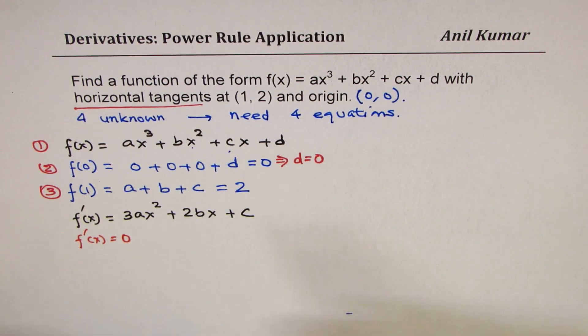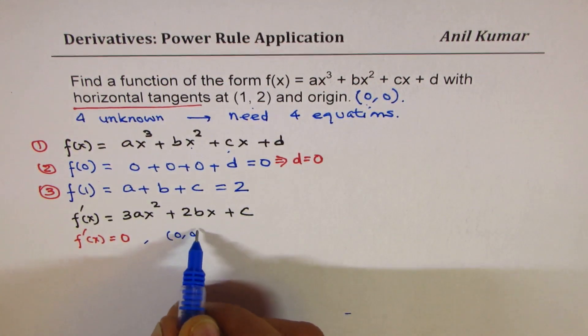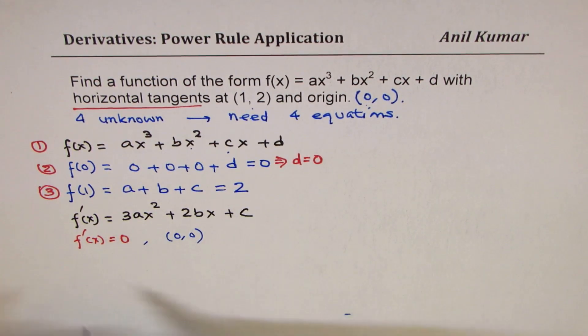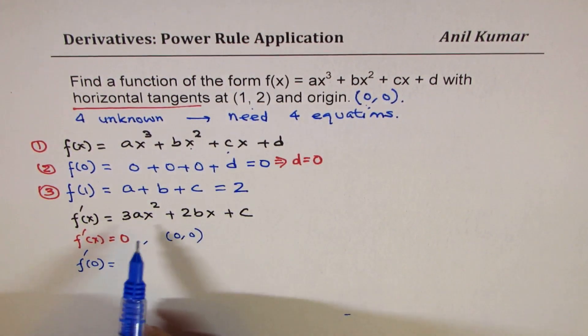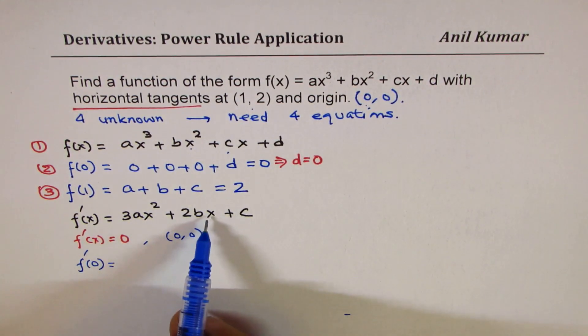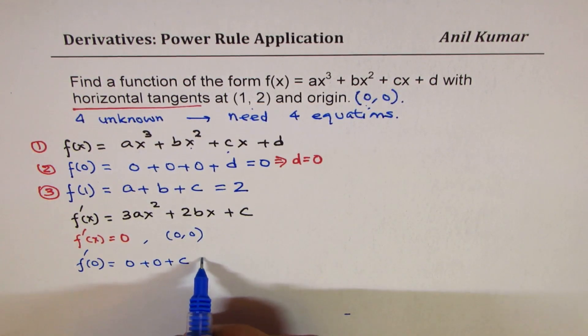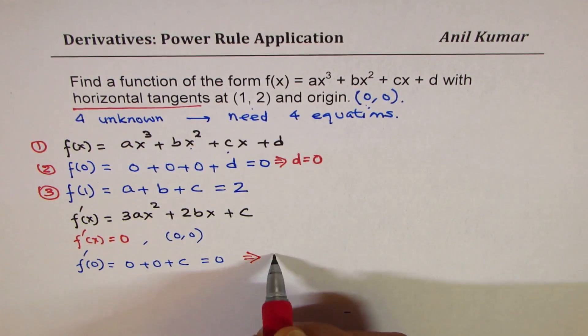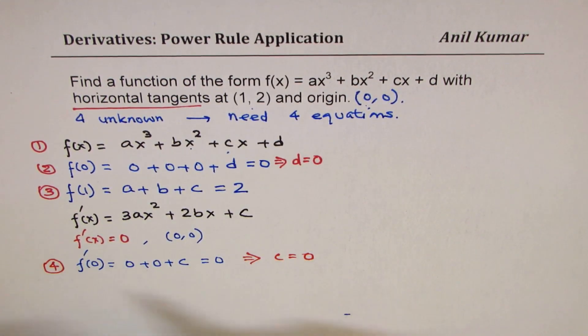So when we say horizontal tangent, it means f dash x equals to 0. And we are given this at two points, origin and this point. So again, let us use the point (0, 0). So we get f dash of 0 is equal to, so substitute 0 for x. So we get 0 plus 0 plus c, and that should be equal to 0, which gives you the value of c as 0.